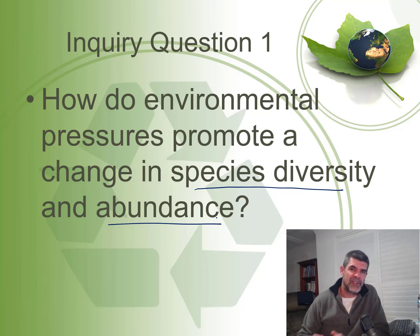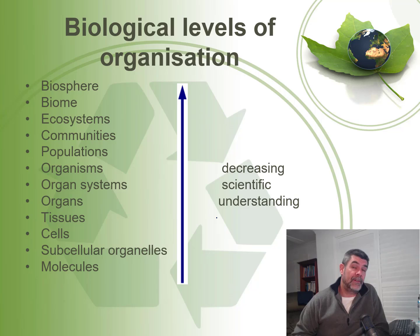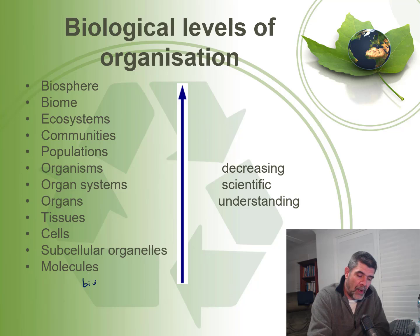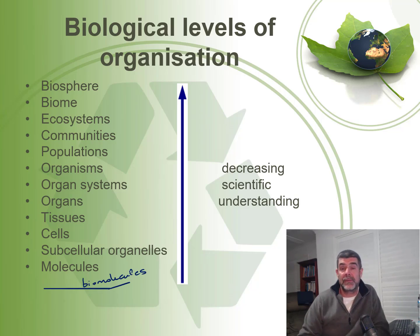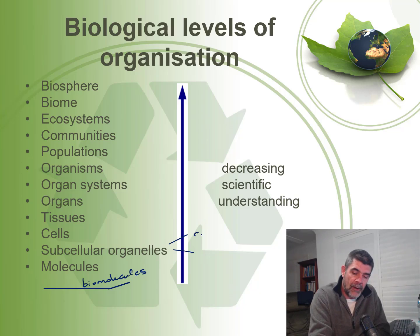Up to this point, the first two modules we've looked at have been cells as the basis of life and organization of living things. We've delved into some of the biomolecules that are very important in chemical systems, including processes such as photosynthesis and respiration. We've also looked at different types of organelles, particularly chloroplasts and mitochondria.